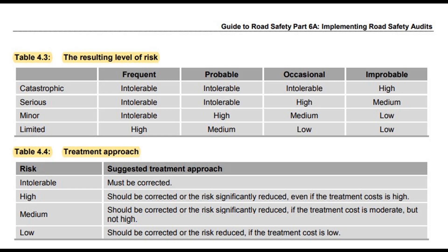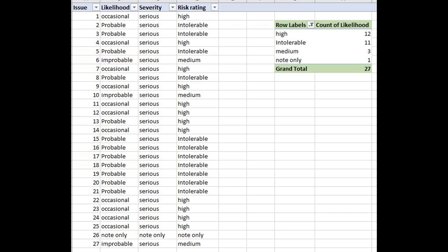If it's probable and serious, it's also intolerable. Occasional and serious is high risk, and improbable and serious gets a medium risk level. This is quite different to how motor vehicle crashes are calculated, because many motor vehicle crashes might end up on the limited-damage bottom line — so occasional and improbable comes out as low risk, probable as medium, and a frequent minor fender-bender as high. All those risk ratings are lower than what you get for cyclists. So when you read the report and see 11 issues rated intolerable and 12 as high, that's why. It's not because the cycleway is incredibly dangerous — it's the way risks are calculated for vulnerable road users. That's really important to keep in mind.